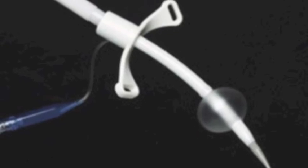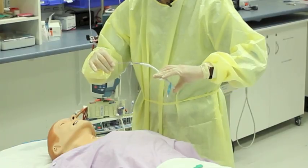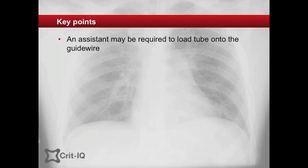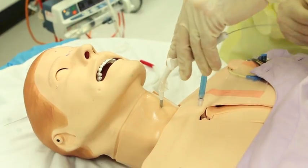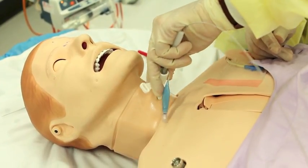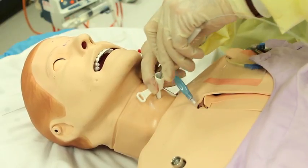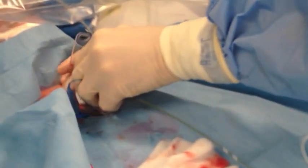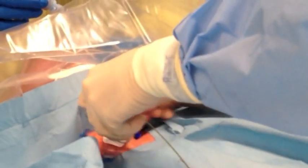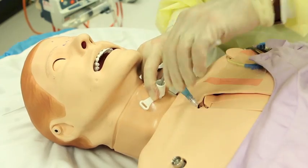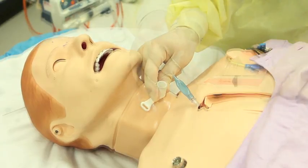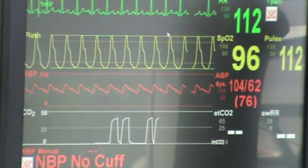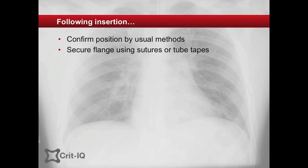The cricothyroidotomy tube, preloaded onto the dilator, is then fed onto the guide wire. Assistance may be required as ongoing control of the precious guide wire is essential. The tube can then be advanced over the guide wire into the airway using a rotating hand motion. The tip of the tube should be almost perpendicular to the membrane as it starts to enter the airway, before a downward rotation carries the tip towards the carina. Once in place, the dilator and wire are withdrawn as one and the cuff is inflated. The position of the tube in the airway is confirmed via standard methods and the flange is secured before connecting the patient to the ventilator circuit.